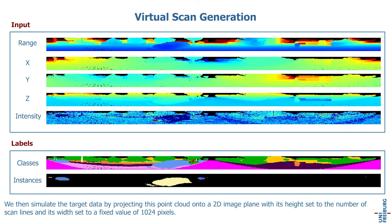We then simulate the target data by projecting this point cloud onto a 2D image plane, with its height set to the number of scan lines and its width set to a fixed value of 1024 pixels.